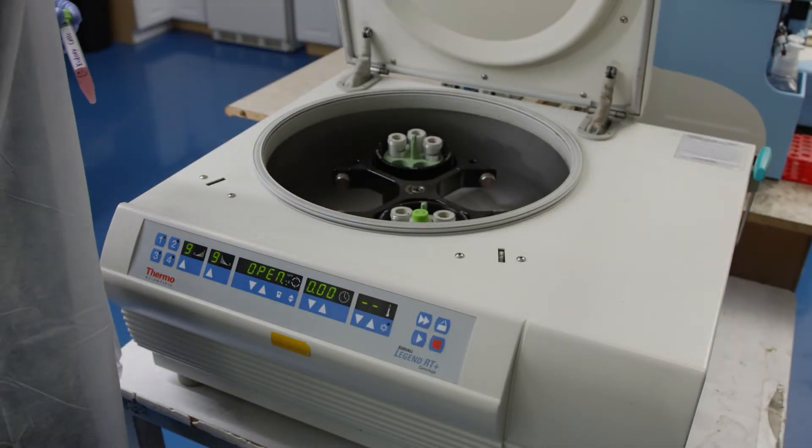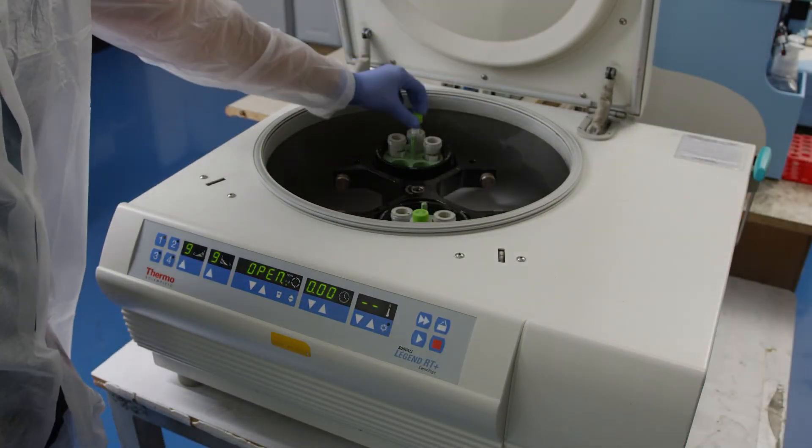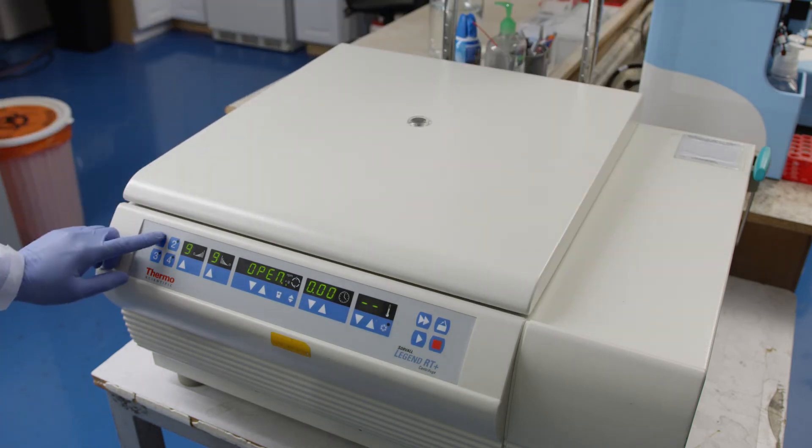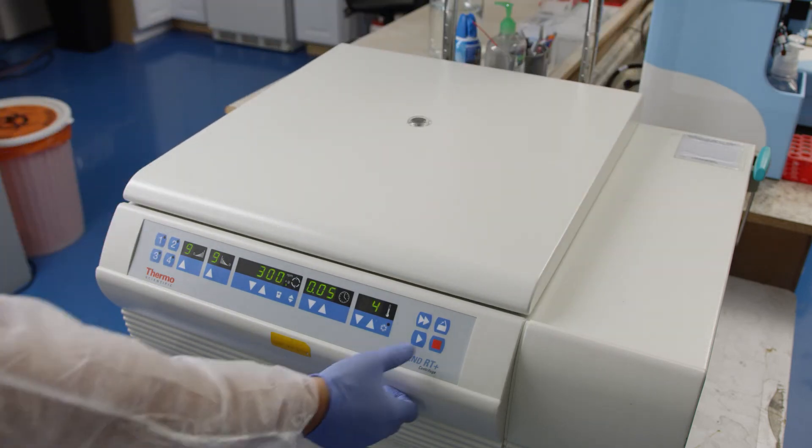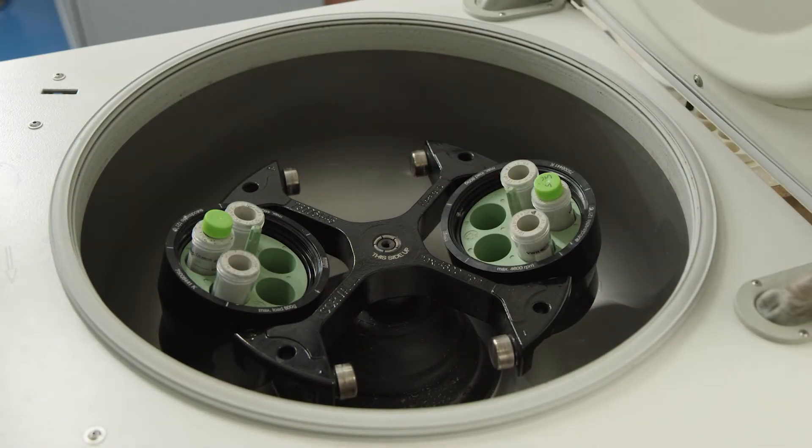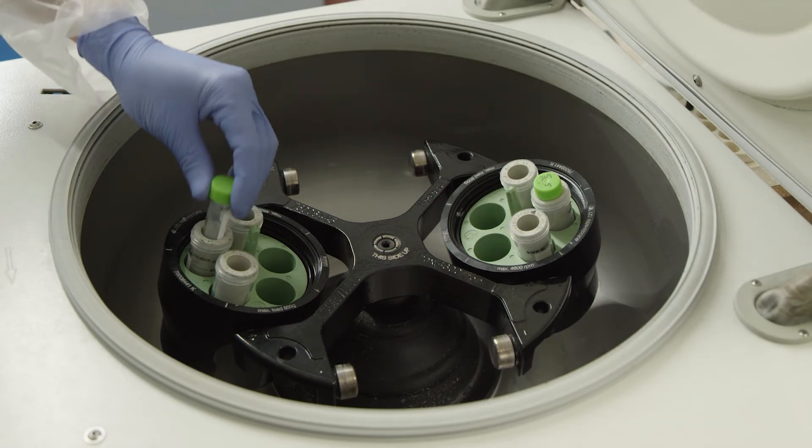After transferring the cell suspension to a conical tube, centrifuge the tube for 5 minutes at 300g and 4 degrees, or at a speed appropriate for your particular tissue. After centrifugation, carefully remove the supernatant without disturbing your pellet.